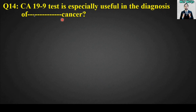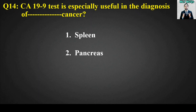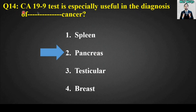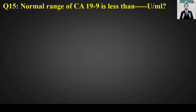MCQ number fourteen: The CA-19-9 test is specially useful in the diagnosis of blank cancer. Options are spleen, pancreas, testicular, or breast. The right answer is option number two: pancreas. The CA-19-9 test is specially useful in the diagnosis of pancreatic cancer.